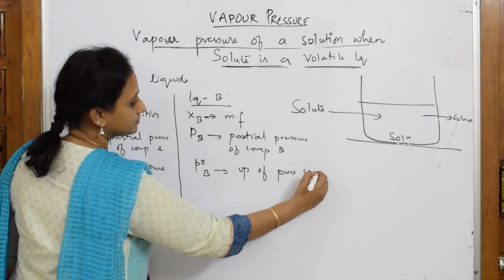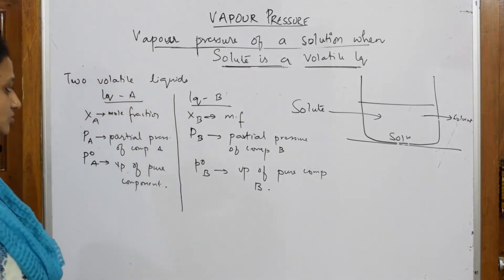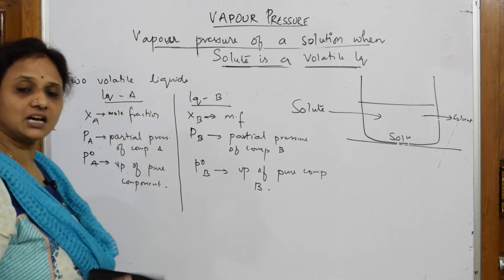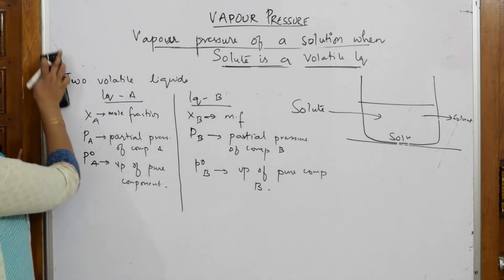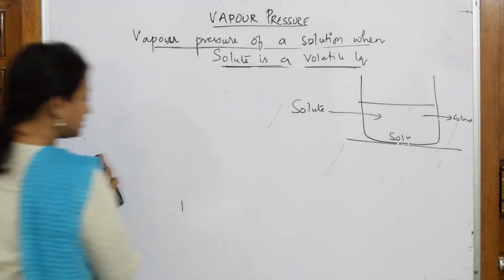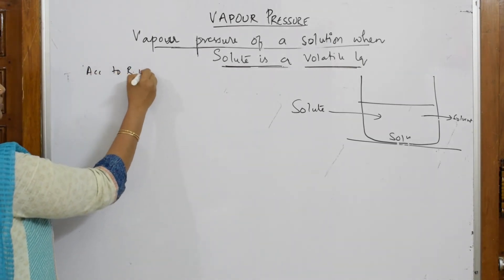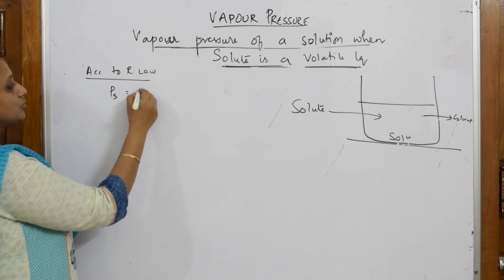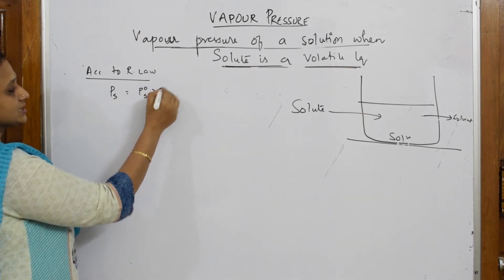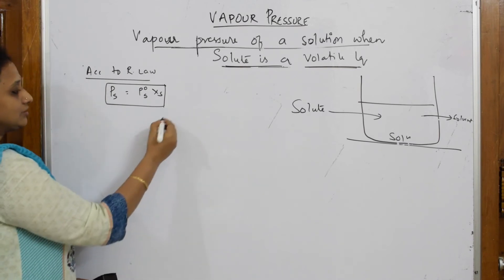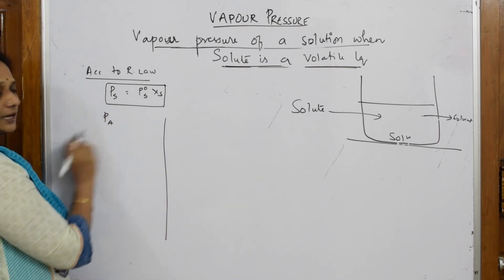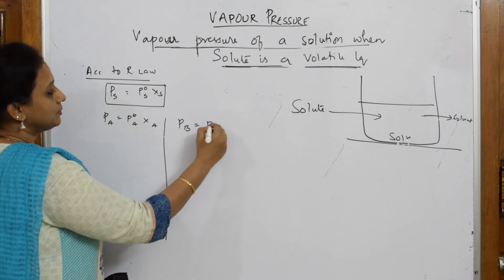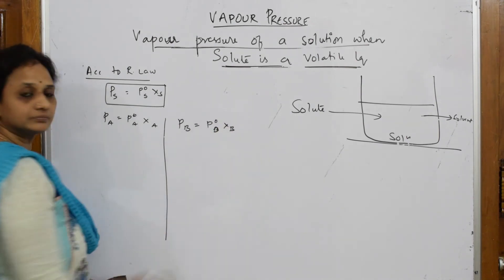This is my basic information. Now let us apply it to Raoult's law and see how the pressure varies. According to Raoult's law, we have written PS = P0S × XS. Since I have two components, let us write for both. Instead of PS, this becomes PA = P0A × XA. And for the second component: PB = P0B × XB. Simple.